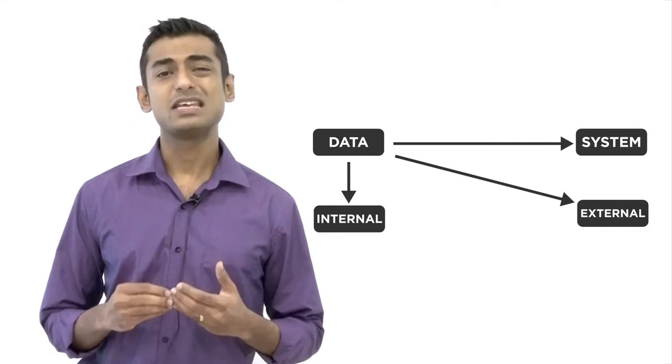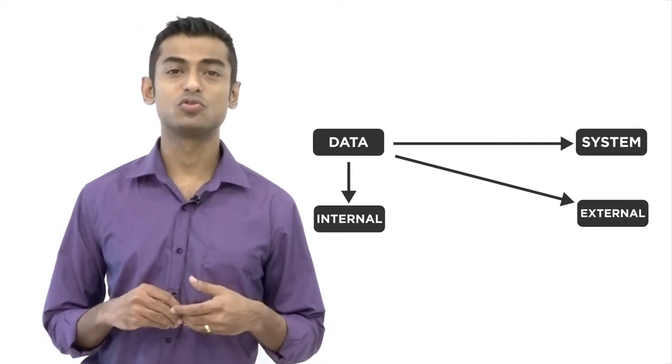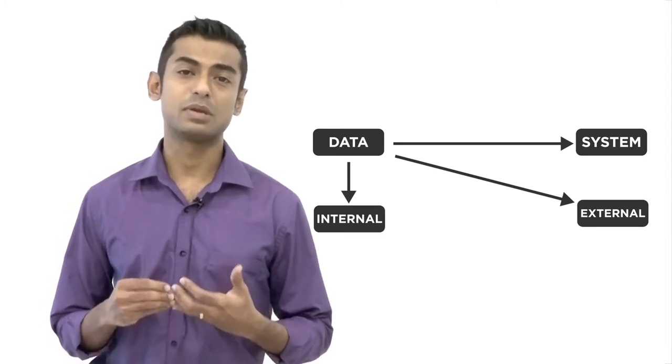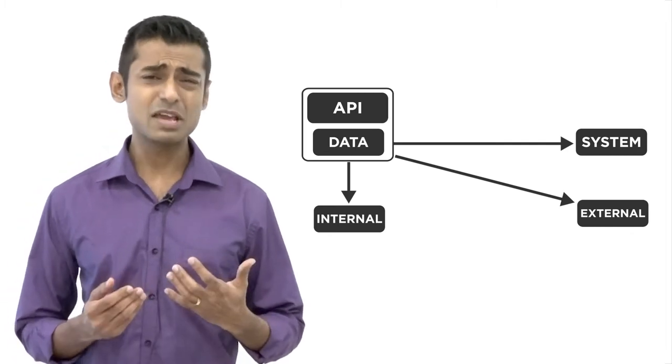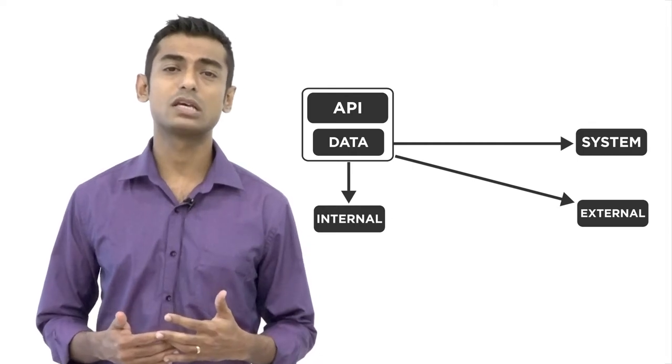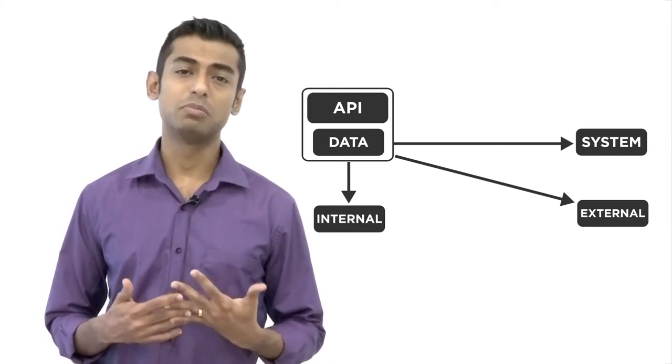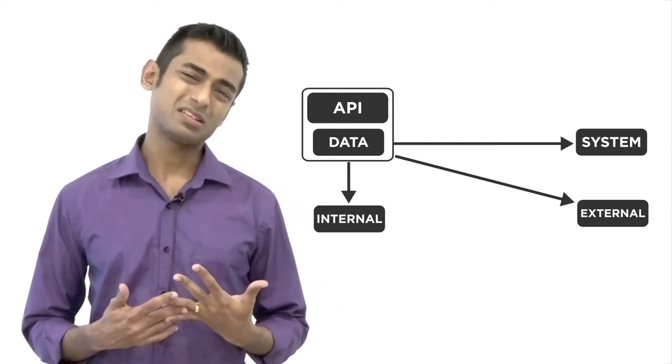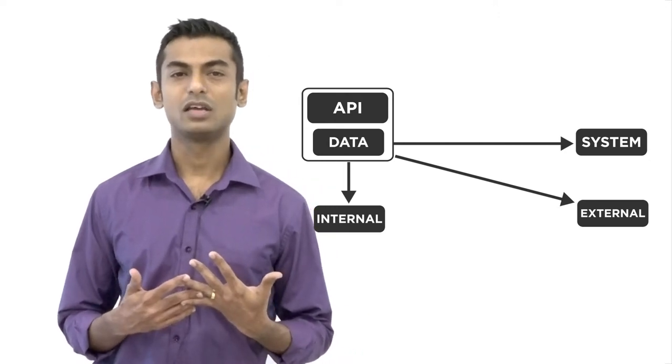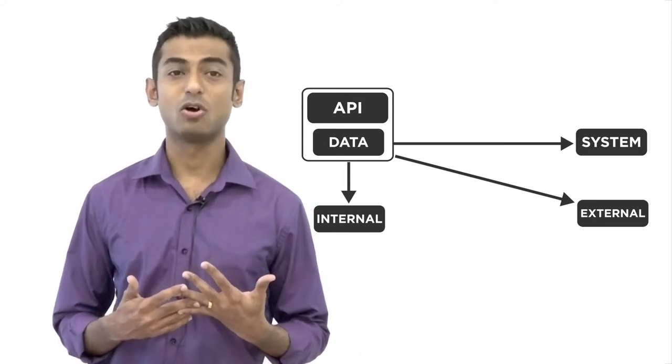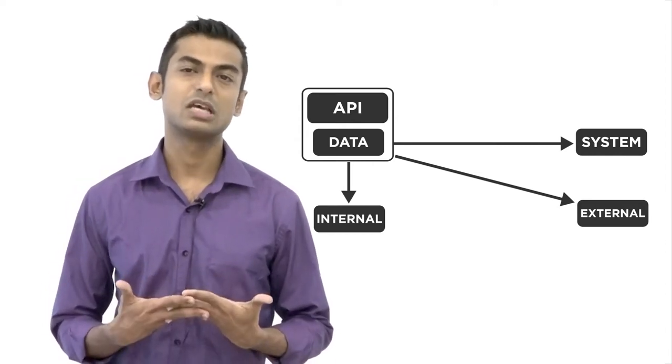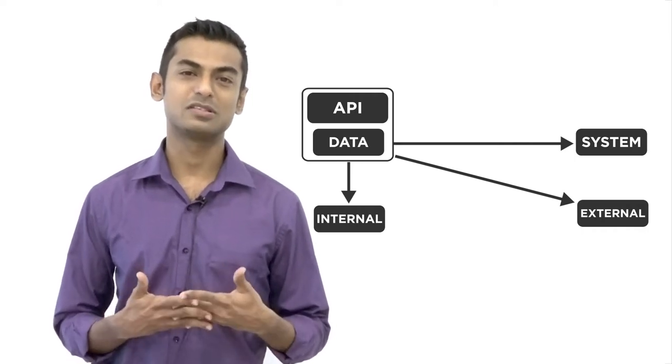So the main interface that systems use to talk to each other, and users have to interact with systems, are APIs. These APIs can be either exposed over the internal network of your organization or over the internet publicly. What this does is it promotes accessibility and sharing of data in your organization and outside as well, and this ends up empowering your business and your customers.